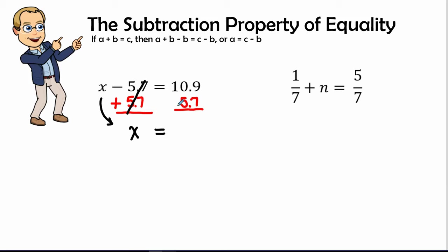Then we add 5.7 to 10.9. So 9 plus 7 is 16, we carry our 1 and bring our decimal down, right in line with each other.